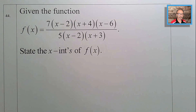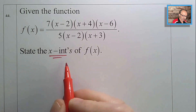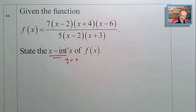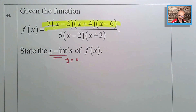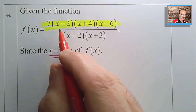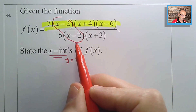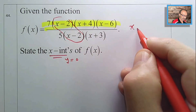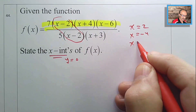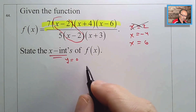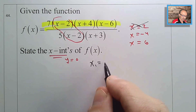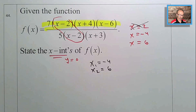Number forty-four: state the x-intercepts. Setting the numerator to zero gives potential zeros at x = 2, x = −4, and x = 6. However, x = 2 is a hole (common factor), so the x-intercepts are only x₁ = −4 and x₂ = 6.